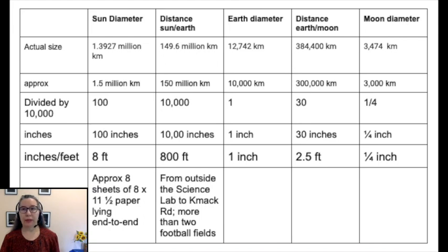So if I wanted to make a model of the Sun and the Moon and the Earth where the Earth was one inch in diameter, that's fine. I can draw something one inch in diameter. But the problem is that the Sun would have to be eight feet in diameter. That's so big, that's bigger than a lot of people's rooms in their houses, so it would have to be outdoors. The real problem is the distance from the Sun to the Earth is so far, it would have to be 800 feet away. That's the distance from the science lab to Kinderkamek Road. It's more than two football fields laid end to end.